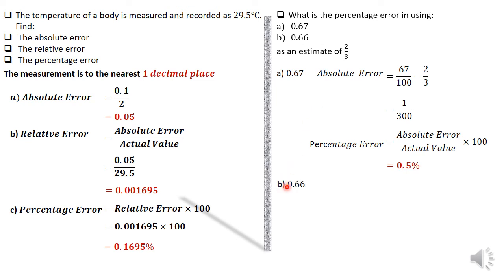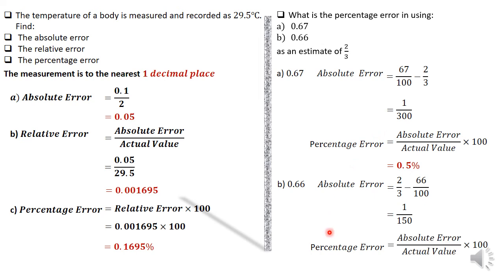For part B, 0.66: the absolute error is 2/3 minus 66/100, which equals 1/150 — that is 2 times 1/300. The percentage error is the absolute error divided by the actual value times 100, which gives 1%. That brings us to the end of the second lesson on calculating absolute, relative, and percentage errors. We'll move on to the next part in our next video.